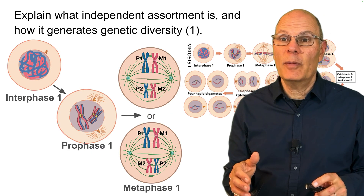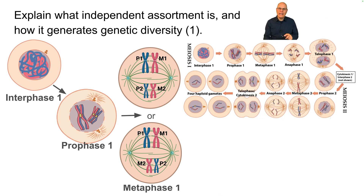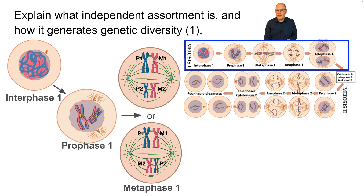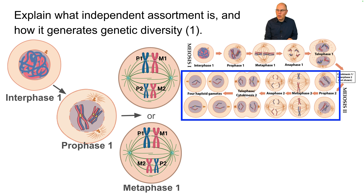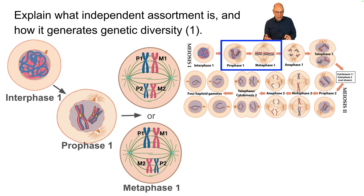Explain what independent assortment is and how it generates genetic diversity. Note that the phases of mitosis and meiosis have the same names, the same designations, but because there are two cell divisions in meiosis, we have to give them a suffix. In meiosis there's interphase one, followed by prophase one, metaphase one, et cetera. Then there's cytokinesis, interphase two, followed by prophase two, metaphase two, anaphase two, et cetera. The events we're going to talk about happen between prophase one and metaphase one — that's where independent assortment really takes place.